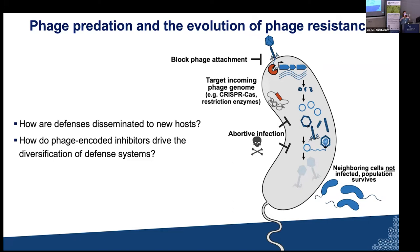We have a pretty limited handle on phage-encoded inhibitors compared to the many defense systems we have cataloged. The one exception are CRISPRs and anti-CRISPRs — it's very clear from that beautiful work that the diversification of CRISPR-Cas systems is driven in large part by phage-encoded inhibitors. Undoubtedly those same parallels are at play for all other mechanisms. But we don't have a good handle on phage-encoded inhibitors, often because people study these systems in heterologous hosts with phages that haven't had the pressure to evolve inhibitors.